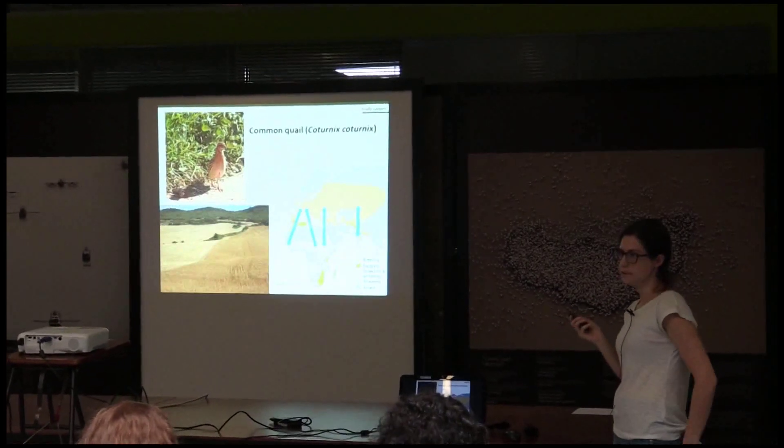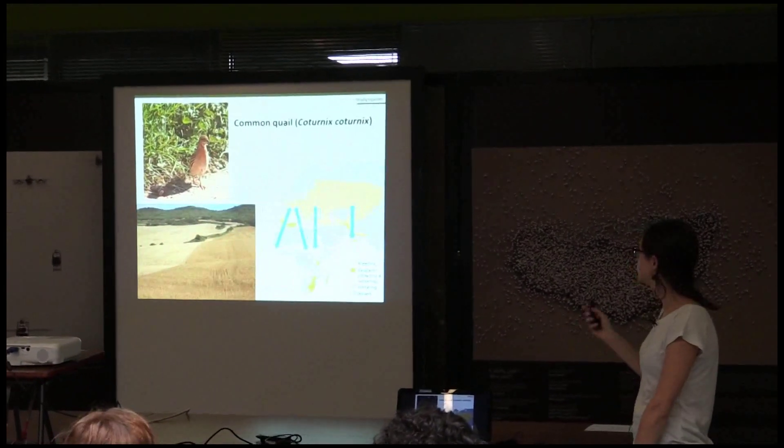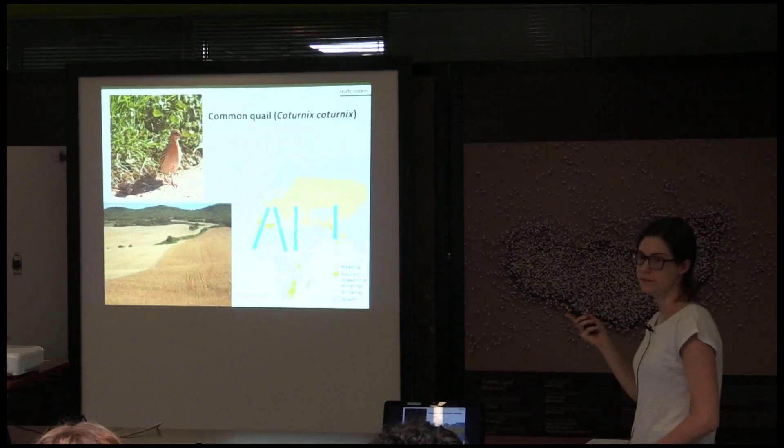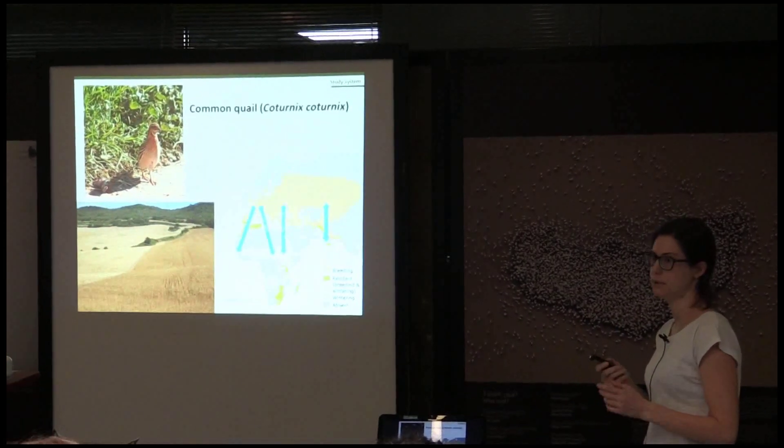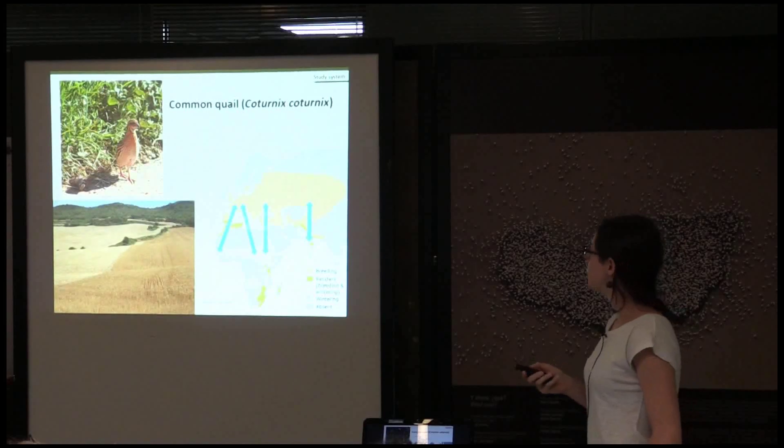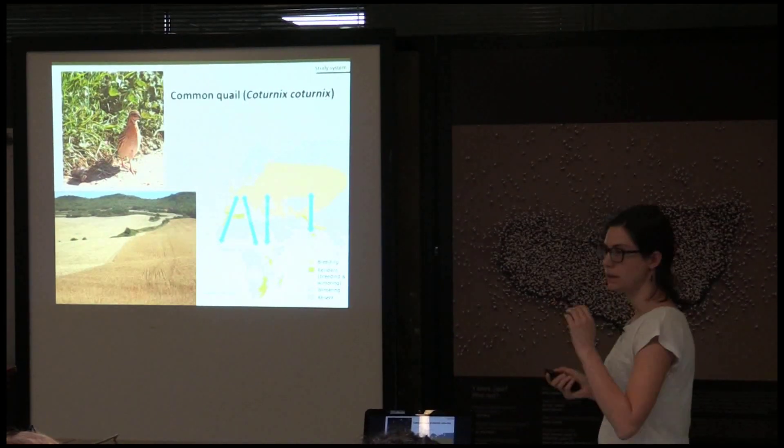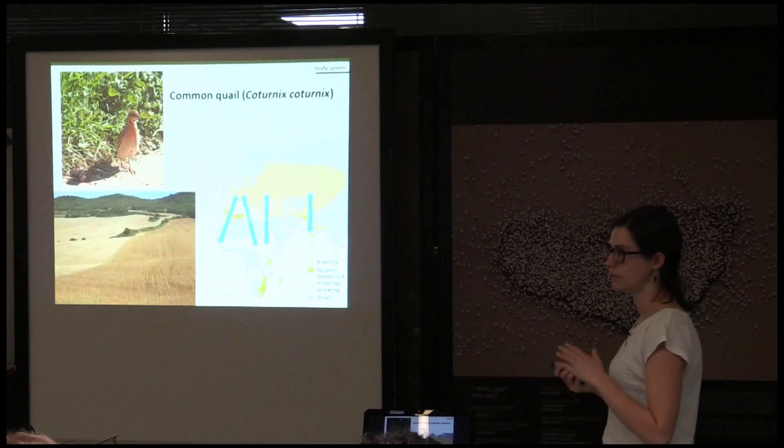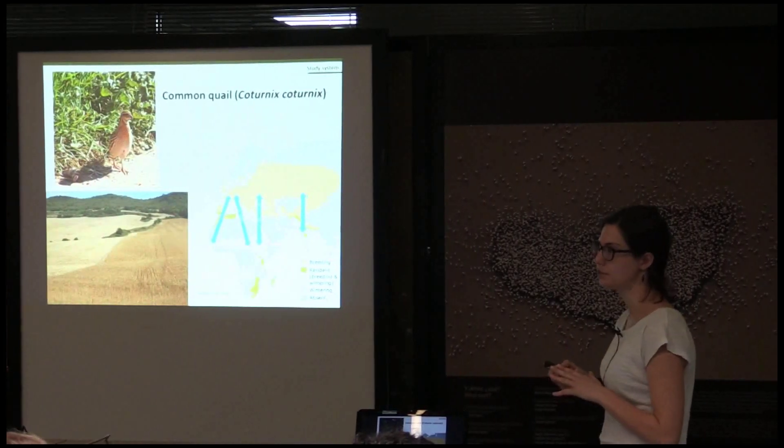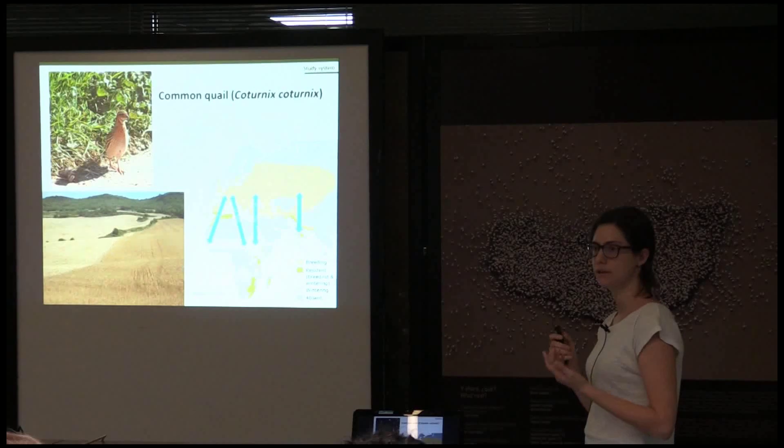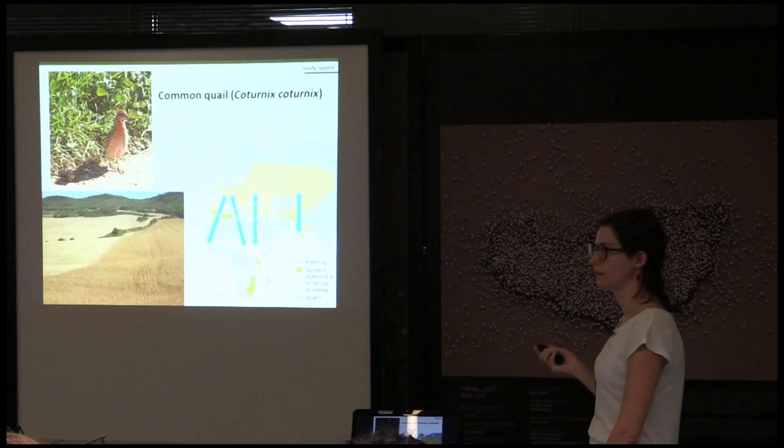Common quails are migratory birds that live in grassland, both natural and anthropogenic, and they are widely distributed in all the Palearctic regions. In this study, we focus on samples from the Iberian Peninsula, from Italy, from Morocco, and from the Macaronesian Islands.